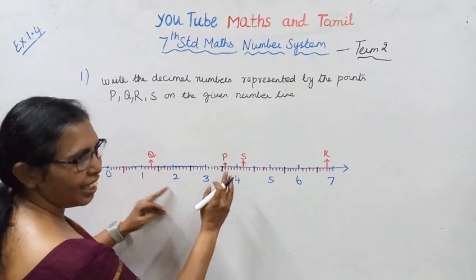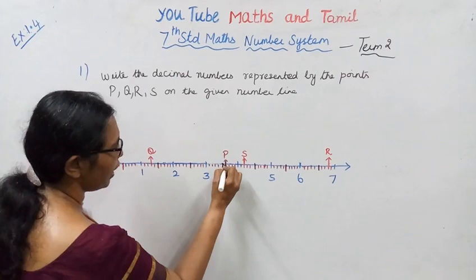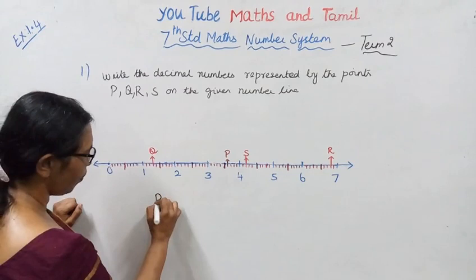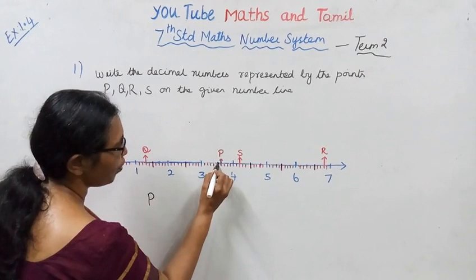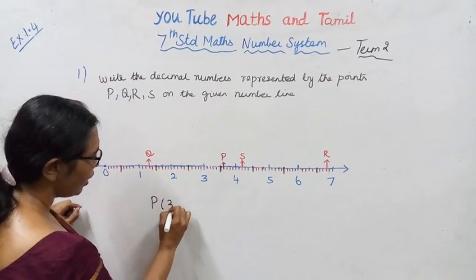Now let's find P, Q, R, S. Point P: counting from 3, one, two, three, four, five, six. P is at 3.6.